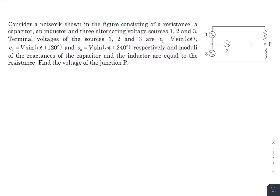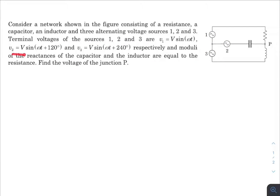There is a network as given in the figure — a resistance, a capacitor, an inductor, and three alternating voltage sources one, two, and three. The terminal voltages of the sources one, two, and three are given with their respective phases. According to the question, X_C equals X_L, the capacitive and inductive reactances are equal to R.